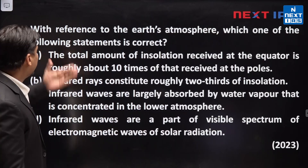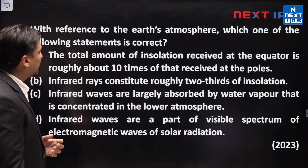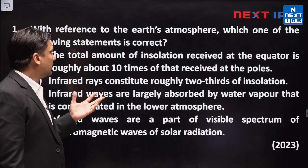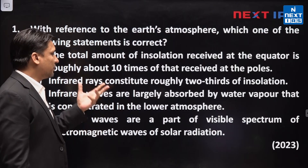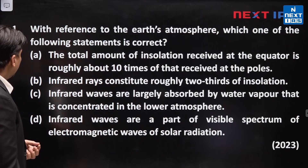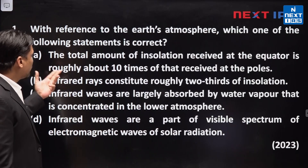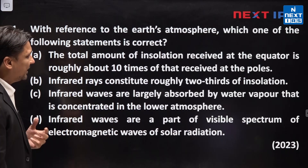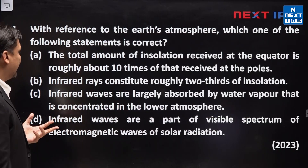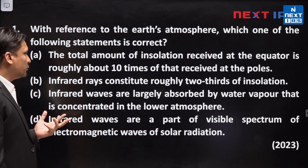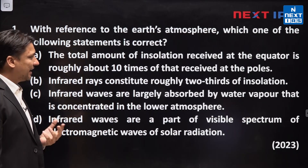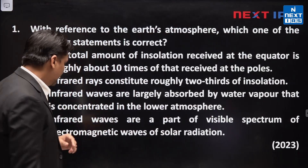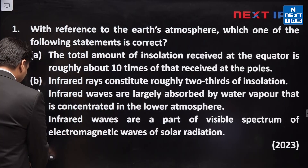The question is: with reference to the earth's atmosphere, which of the following statements is correct? The first statement is: the total amount of insolation received at the equator is roughly about 10 times that received at the poles. This statement is incorrect.